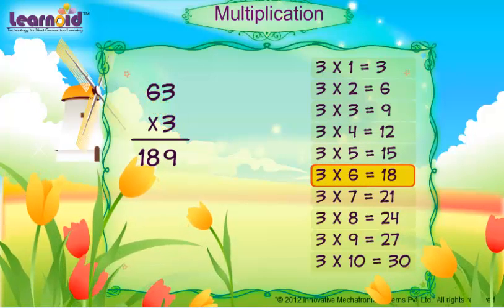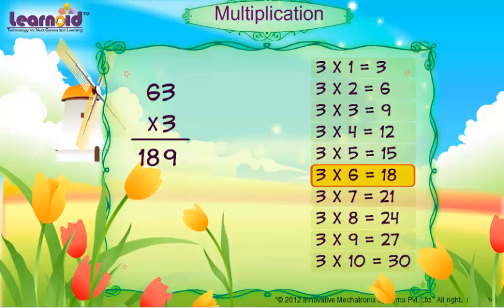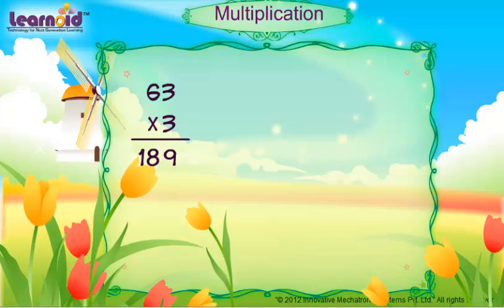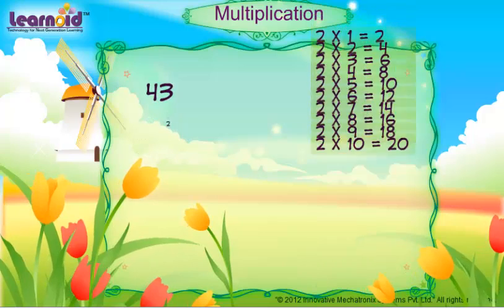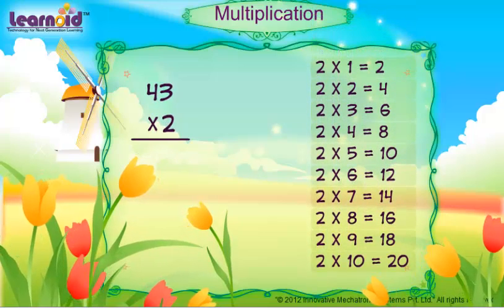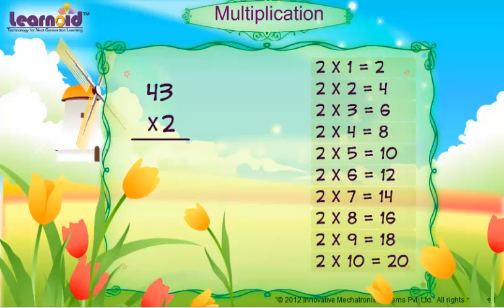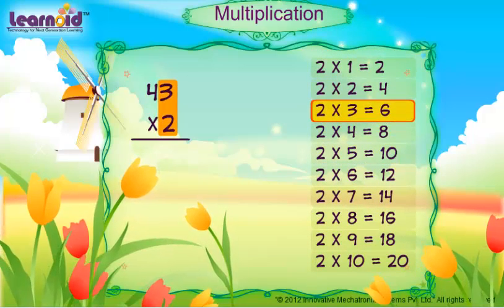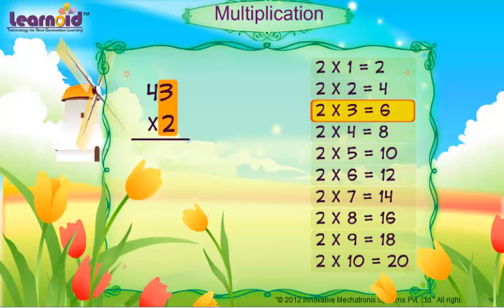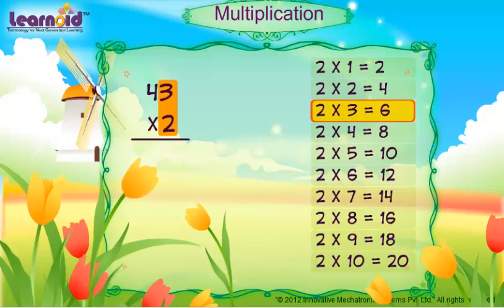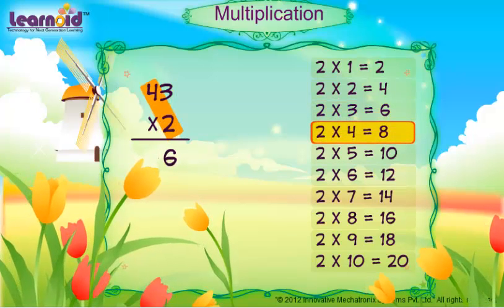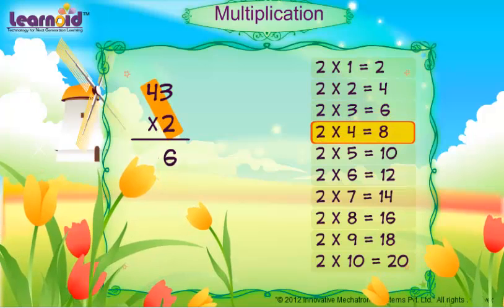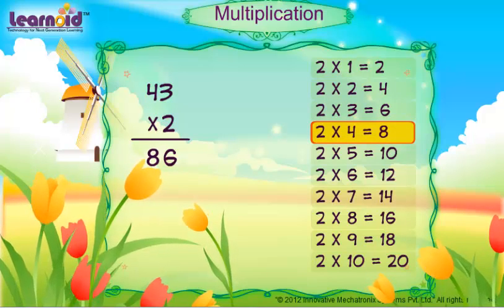Write 18. Answer is 189. Let's see one more example. Multiply 43 with 2. 2 into 3 is 6. Write 6. 2 into 4 is 8. Write 8. Answer is 86.